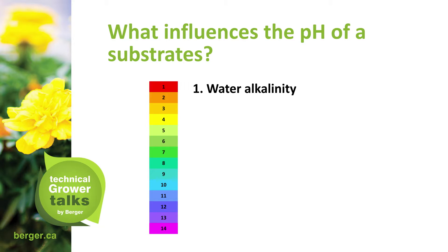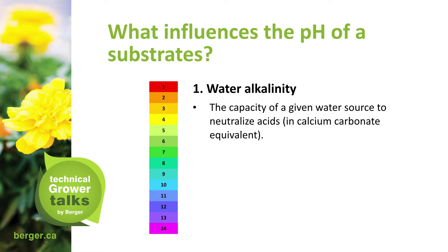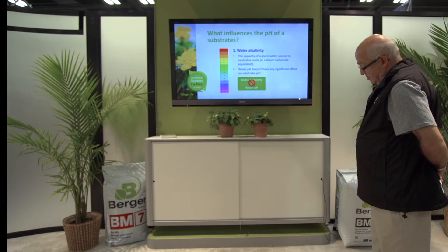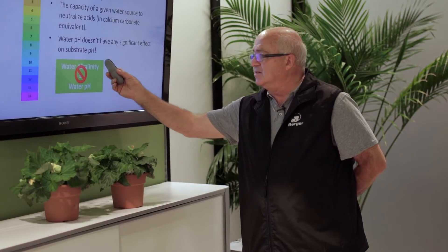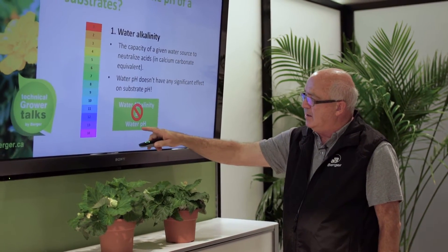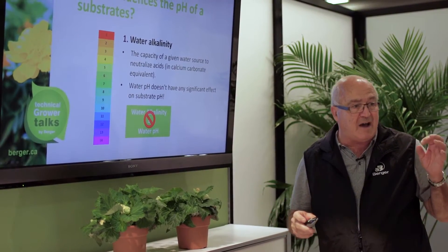What influences the pH of a substrate? Water alkalinity is the number one factor — the capacity of a given water source to neutralize acid, expressed as a calcium carbonate equivalent. Water pH does not have any significant effect on substrate pH, so water alkalinity does not equal water pH. When growers say their pH is high and they want to get the pH down, the key is that we have to get the alkalinity down. The alkalinity is what affects the actual pH of a substrate, not the water pH value you read.